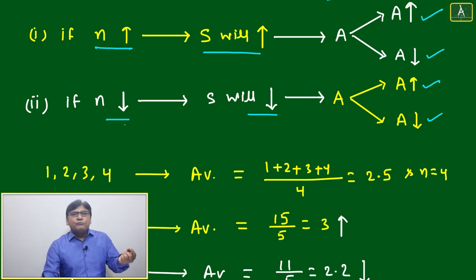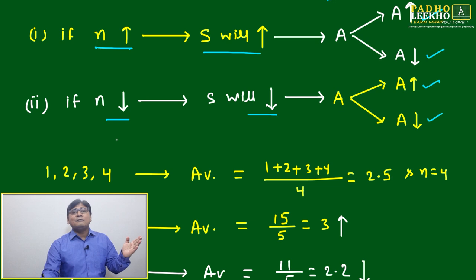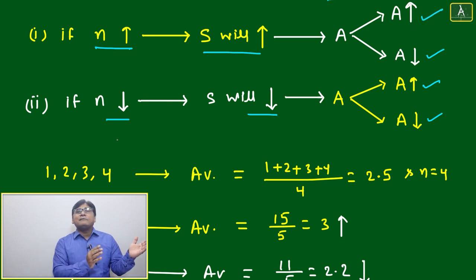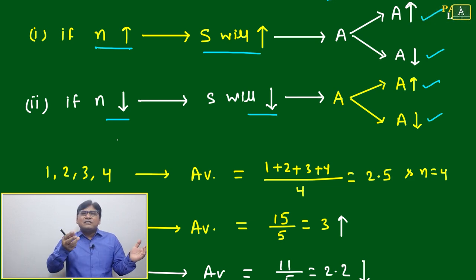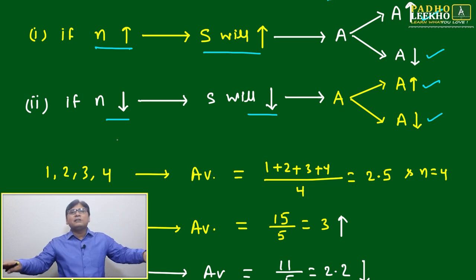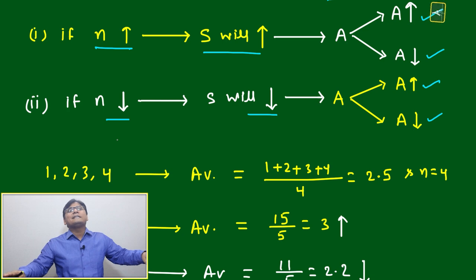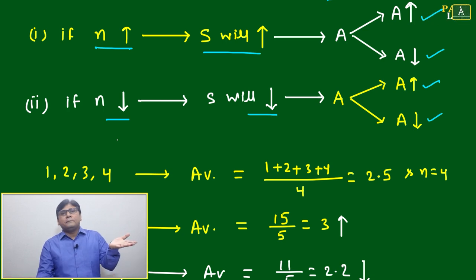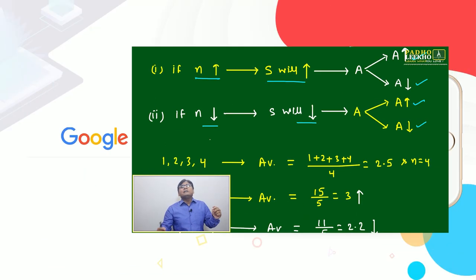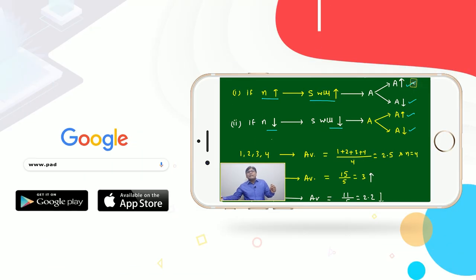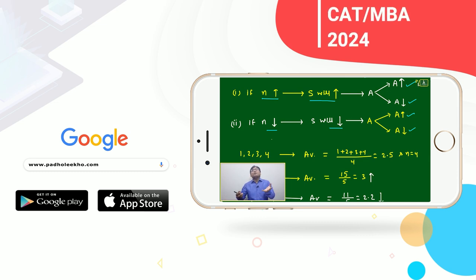Case 1 and Case 2 work in opposite ways. In Case 2, if you remove data that is less than the average, some extra amount distributes over existing numbers and the average goes up. If you remove data that is more than the average, then the remaining data splits from the existing total and the average will decrease.